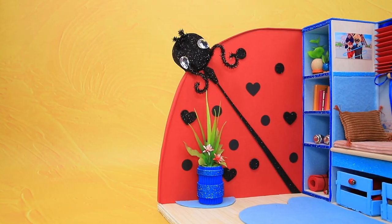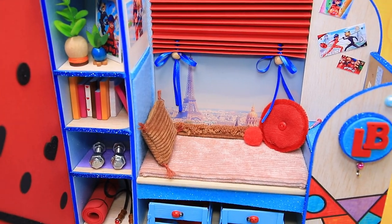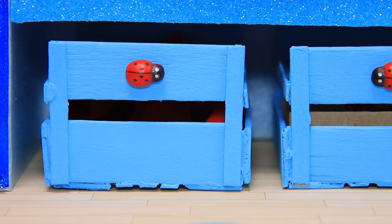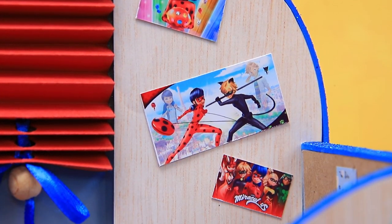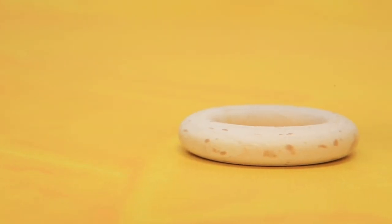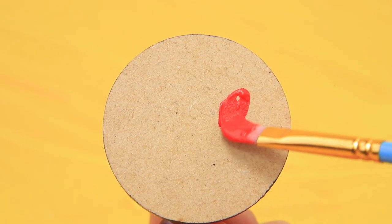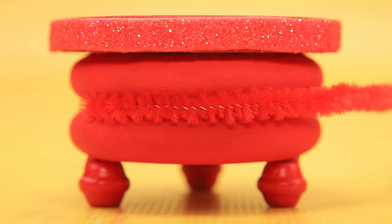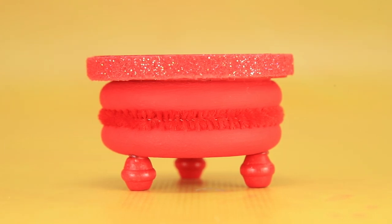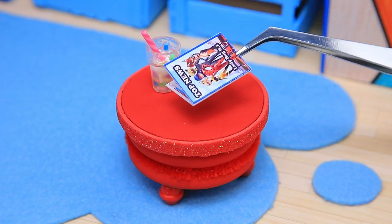Everything is right where it should be. Glue a couple of wooden rings. Install a veneer tabletop. Add a pipe cleaner. You can put anything on the table. A magazine and a glass with a drink are waiting for Catherine.